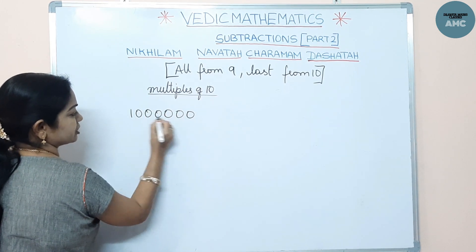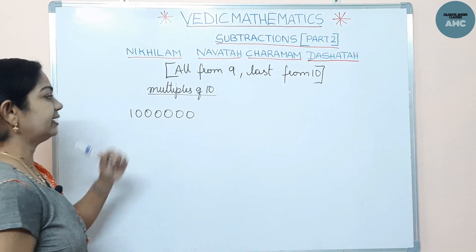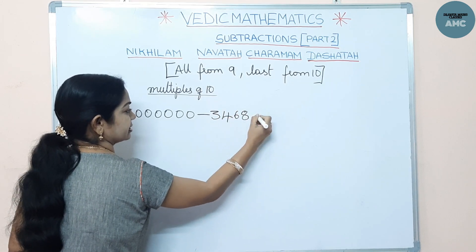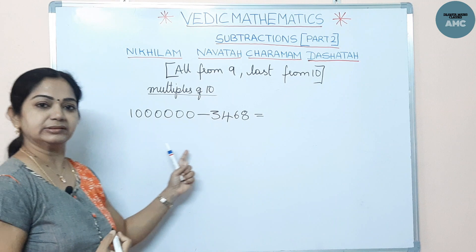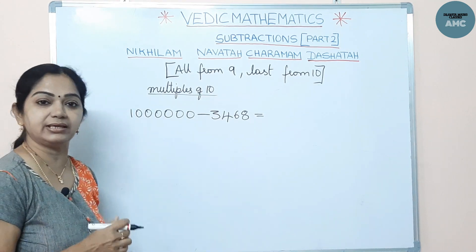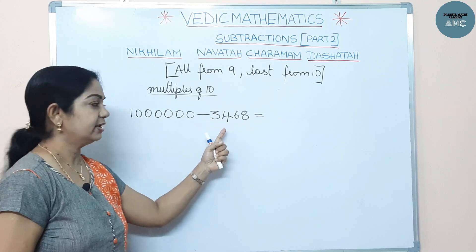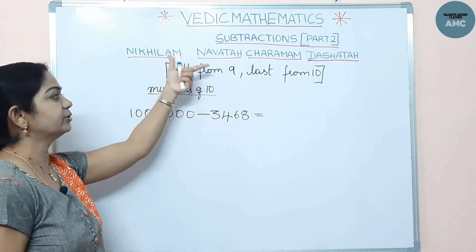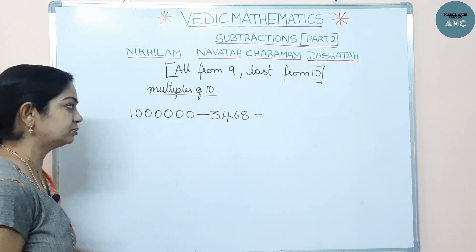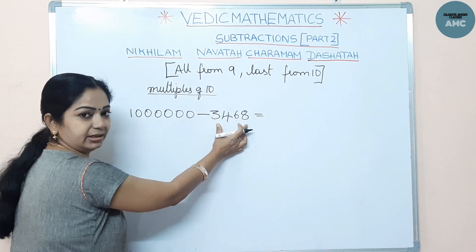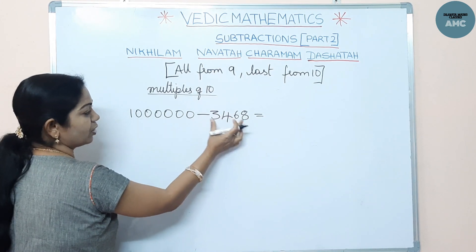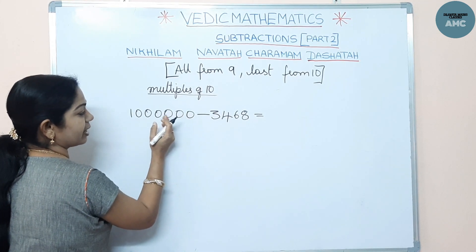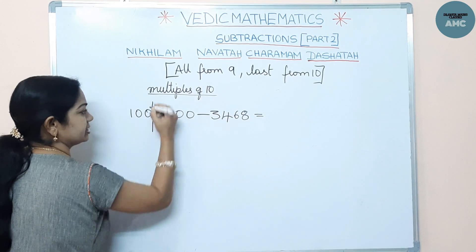Let us take an example with multiples of ten. Take 1,000,000 (ten lakh) minus 3,468. Here, 1,000,000 is the minuend and 3,468 is the subtrahend. Since the subtrahend has four digits, from the right side of the minuend, make a partition after four digits.